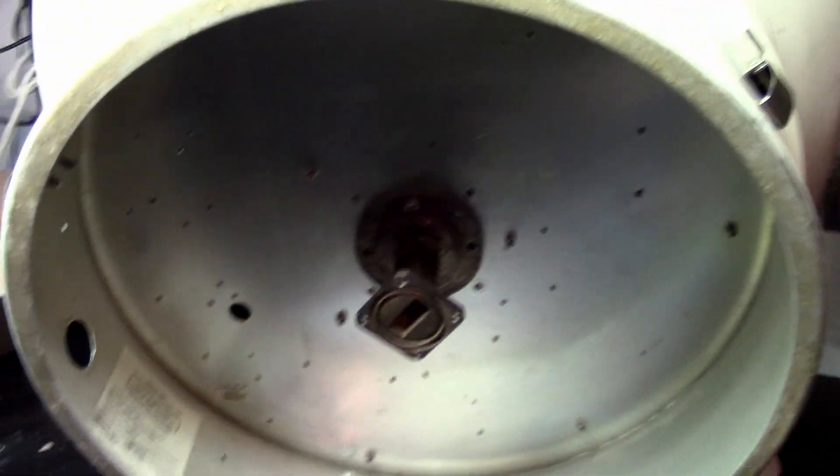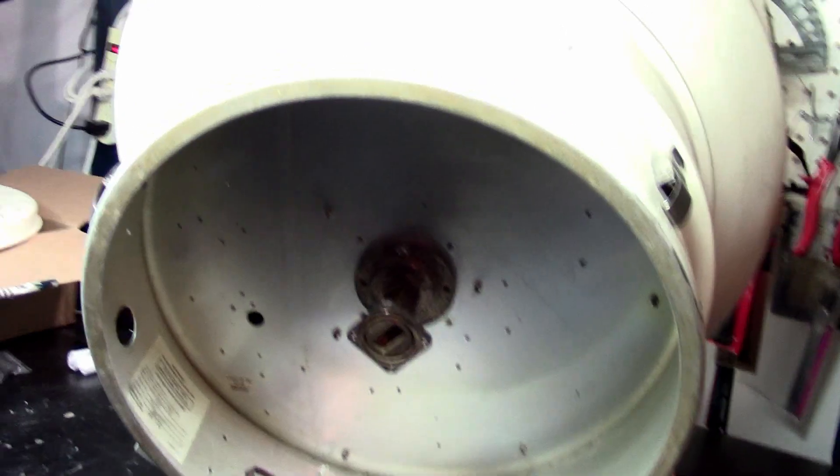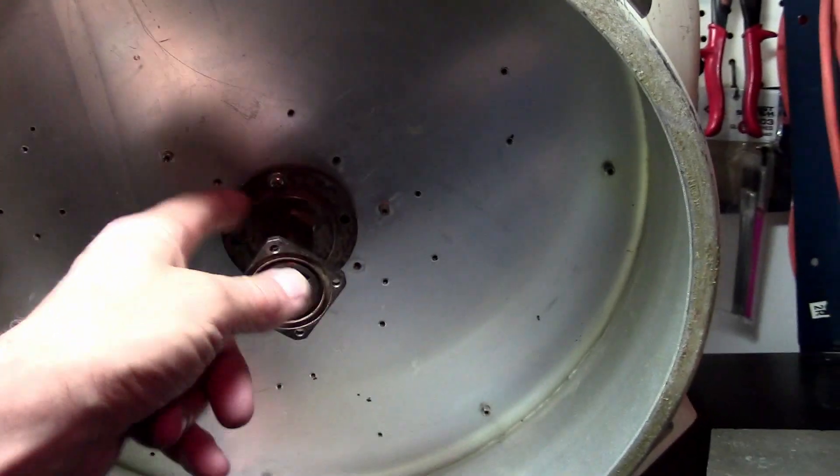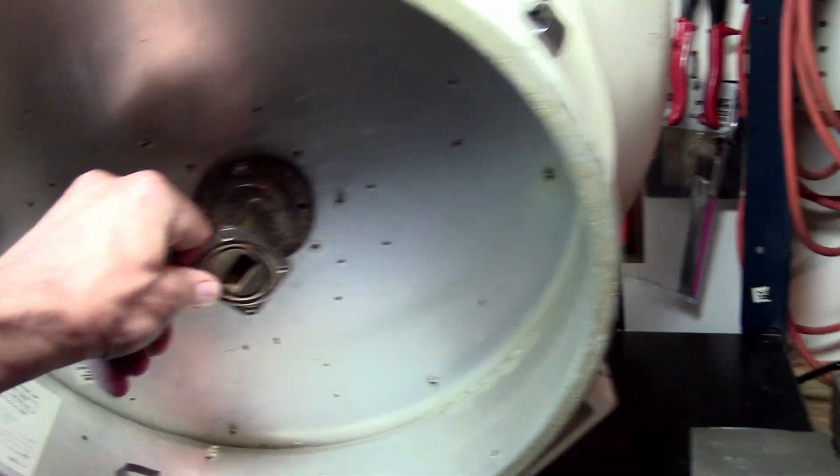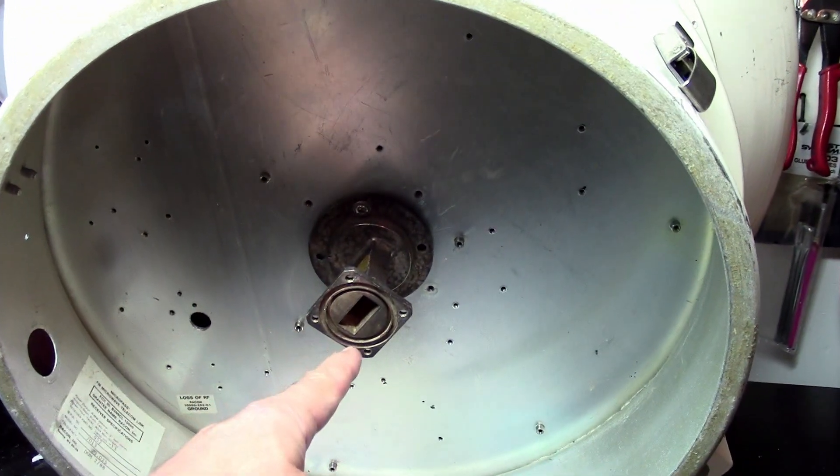As you can see, it's an enclosure, basically, on the back. This is the interface to the feed point. It's a waveguide. It's a WR90.